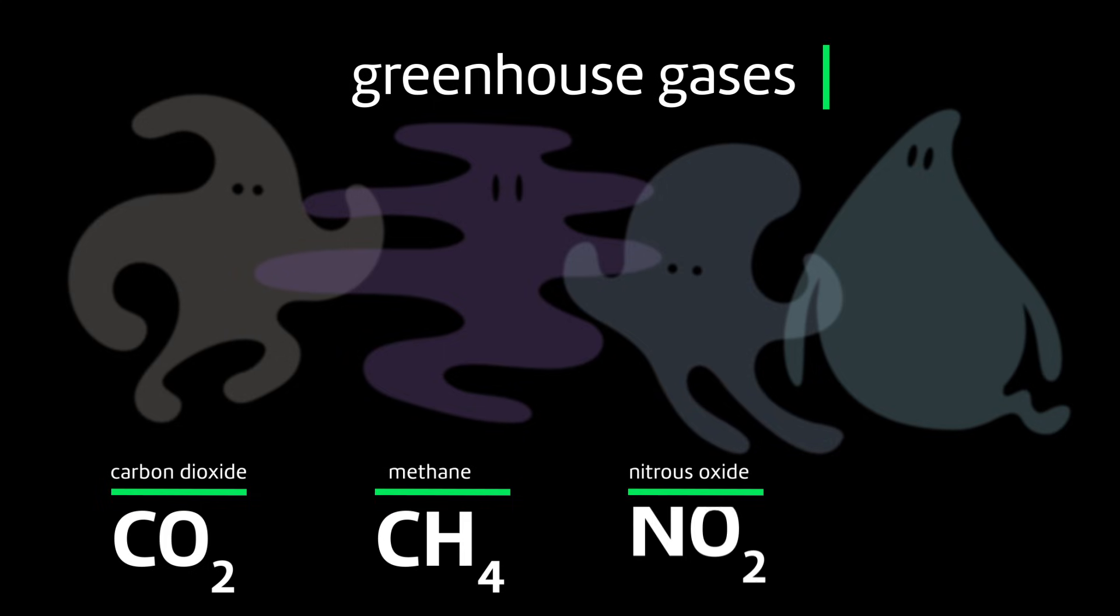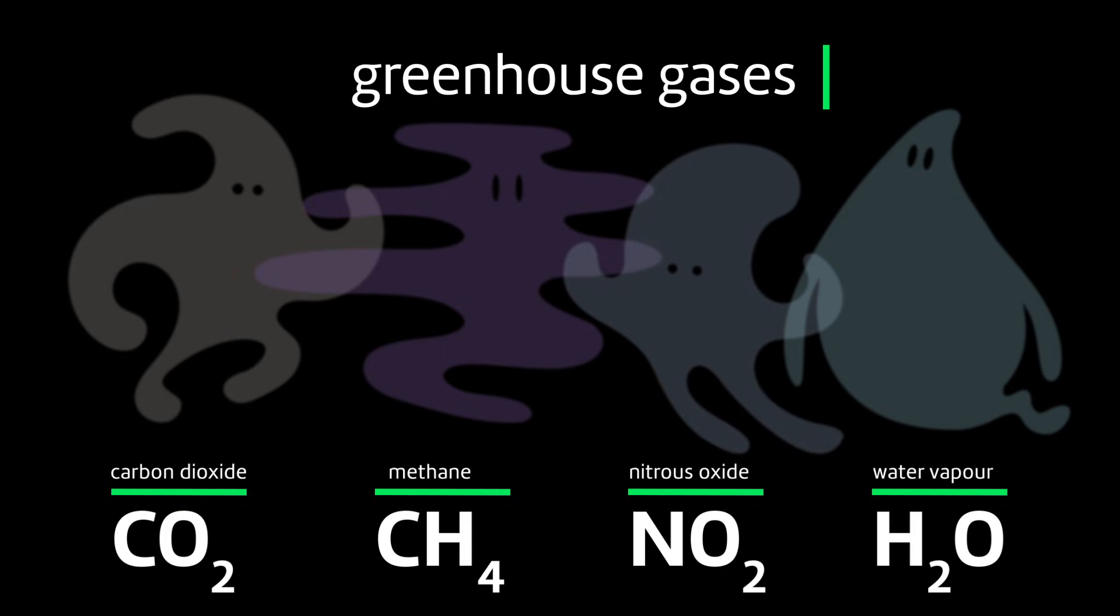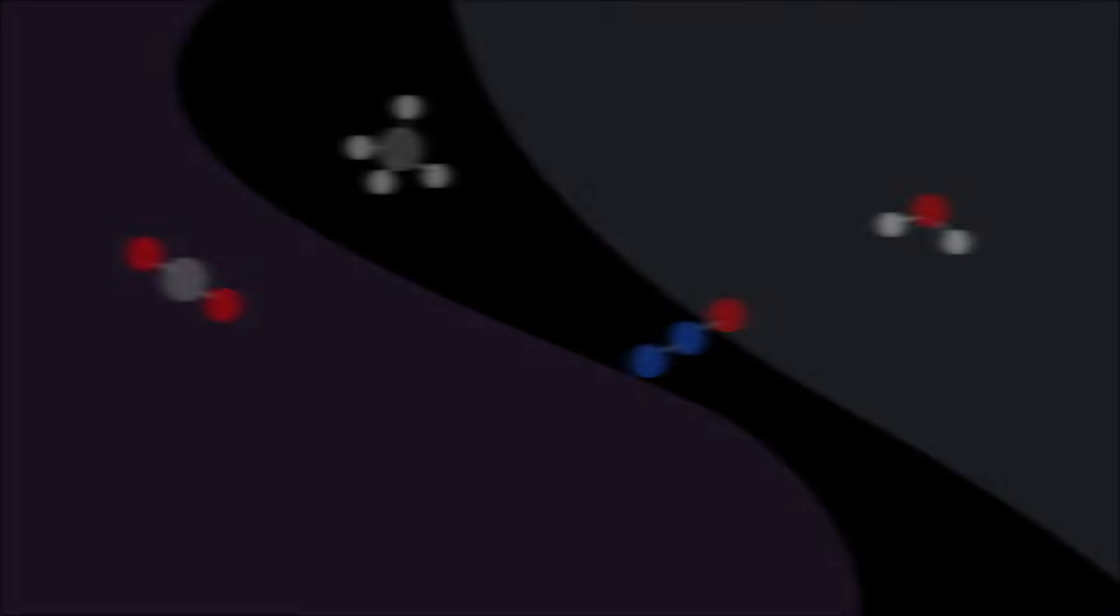But some gases, the so-called greenhouse gases—carbon dioxide, methane, nitrous oxide and water vapor—have molecules with structures that make them absorb the radiation.